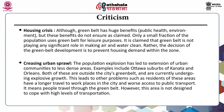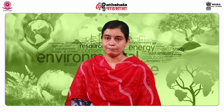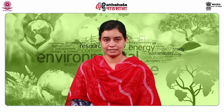The next criticism is increasing urban sprawl. A green belt development increases urban sprawl, which refers to the migration of population from populated towns and cities to low-density residential development areas. Examples include Ottawa suburbs of Canada such as Orleans, which are outside the city's green belt and are currently undergoing explosive growth. This leads to problems such as residents having longer travel to workplaces and worse access to public transport, meaning people travel through the green belt even though this area is not designed to cope with high levels of transportation.